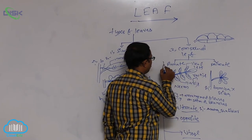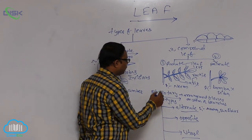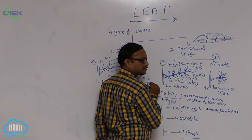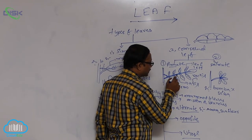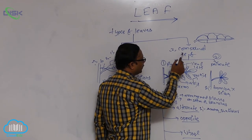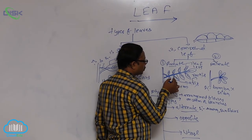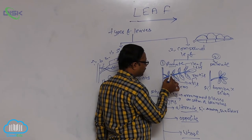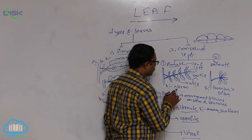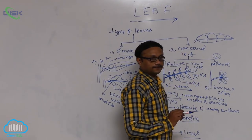Compound leaves are of two types: the first is pinnately compound leaves, and the second is palmately compound leaves. In pinnately compound leaves, an axis or rachis is formed, and leaflets are arranged on either side of this axis. That arrangement is known as a pinnately compound leaf.